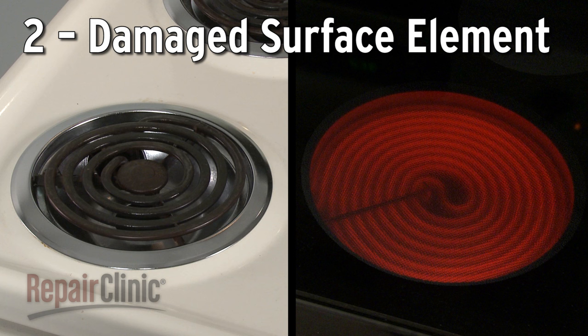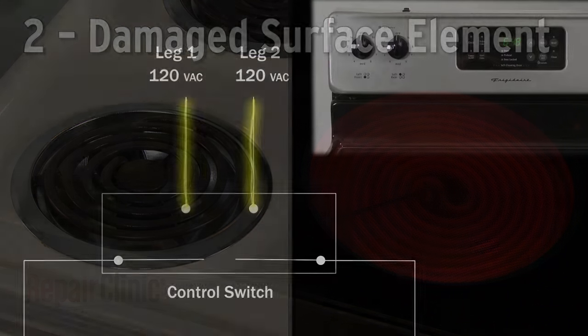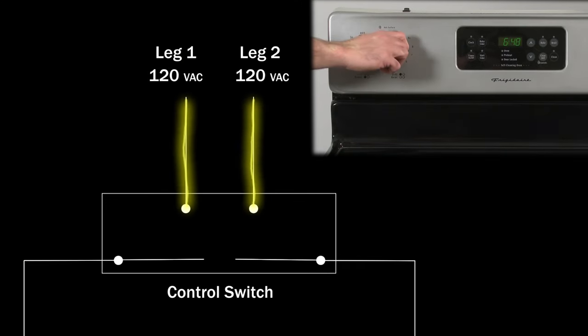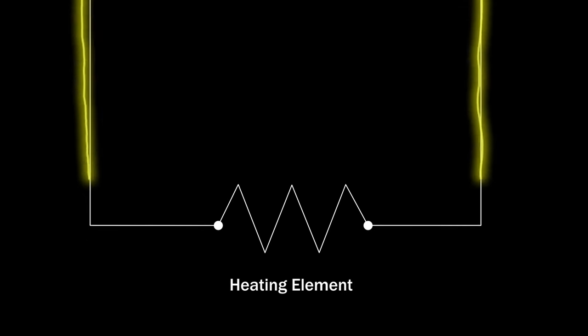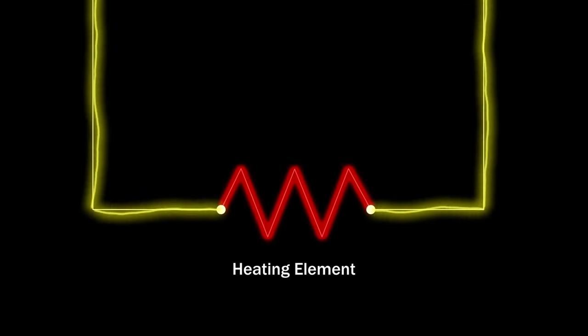Electric ranges have two common styles of surface elements, a conventional coil and a smooth top radiant coil. When the selector knob is turned to a heat setting, the switch allows voltage to travel to the element, closing the circuit and causing the element to heat.